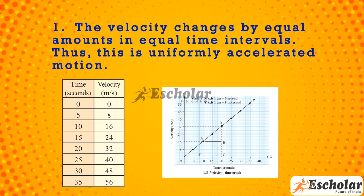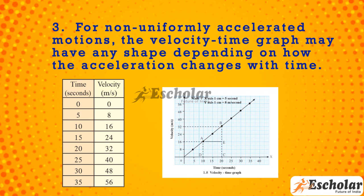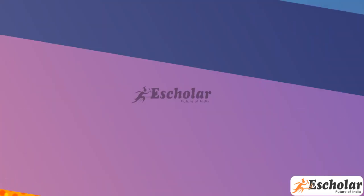For all uniformly accelerated motions, the velocity-time graph is a straight line. For non-uniformly accelerated motion, the velocity-time graph may have any shape depending on how the acceleration changes with time.